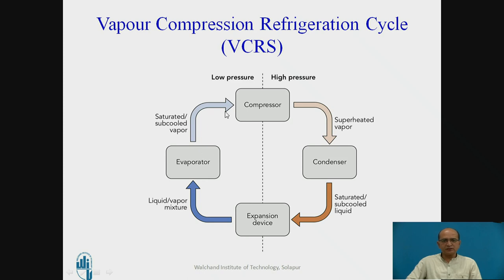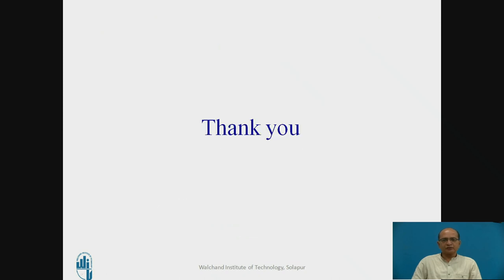So this is a cycle which is performed continuously without the refrigerant crossing the boundary of the system — that is why it is also known as a closed system. The refrigerant is circulated again and again through this vapor compression refrigeration system for more than 20 years, as in the case of a domestic refrigerator. This is the working of the vapor compression refrigeration system. Thank you.